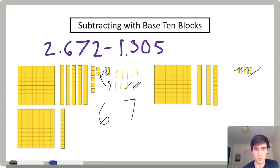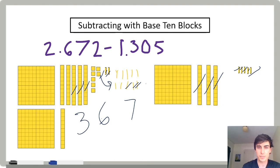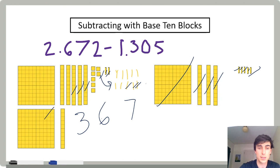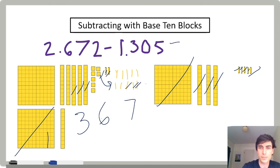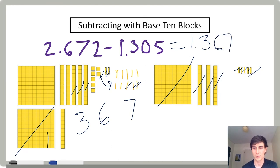Now let's subtract our tenths. I'm going to take away three tenths and I'm left with three tenths. Finally I need to take away my wholes. I'm going to take away one whole and I'm left with one whole. Two and 672 thousandths minus one and 305 thousandths equals one and 367 thousandths.